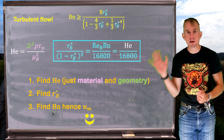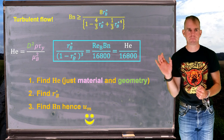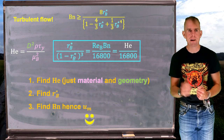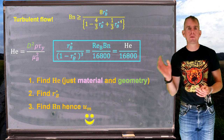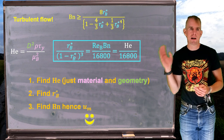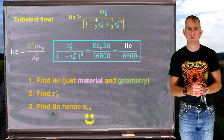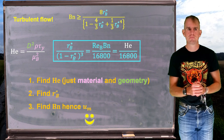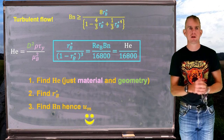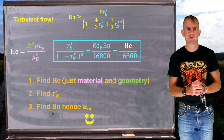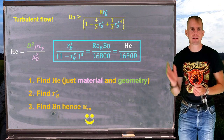Let's summarise this workflow. The first thing is to find the Hedstrom number — remember, it's just a function of the material and the geometry. The second is to use Hedstrom number over 16,800 to find R_B*. There will be a worked example for this in the next part of this lecture. It's very convenient to actually plot this information graphically.